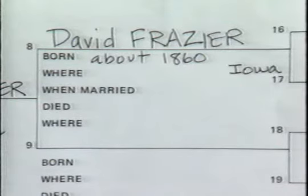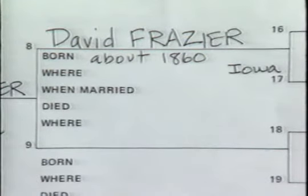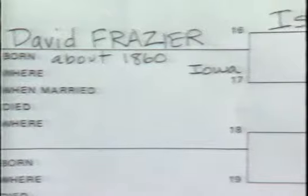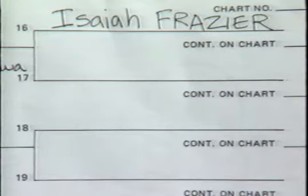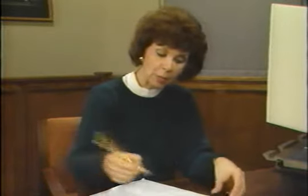Before using the catalog, you need to identify what you already know and set a research goal. Write the names, dates, and places you already have on a pedigree chart — this makes it easy to see what's missing. For example, I've decided to look for more information about my great-grandfather David Frazier. All I know is his name, where he was born, and an approximate date. I'd like to find this missing information and maybe some more about his parents. I'll write this goal on my research log.